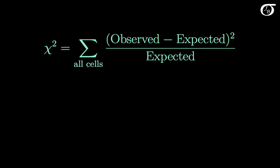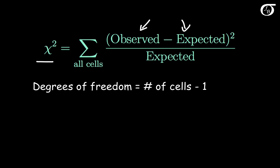The test statistic is a chi-square test statistic. For each cell, we take what we saw in the sample, subtract what we would expect under the null hypothesis, square it, divide by the expected count, and add it up over all cells. If the null hypothesis is true, this test statistic has approximately a chi-square distribution — under the condition that we have a large enough sample size. For one-way tables, degrees of freedom equal the number of cells minus 1. If observed counts are close to expected, the statistic is small; if very different, it is large. Large values give evidence against the null hypothesis.